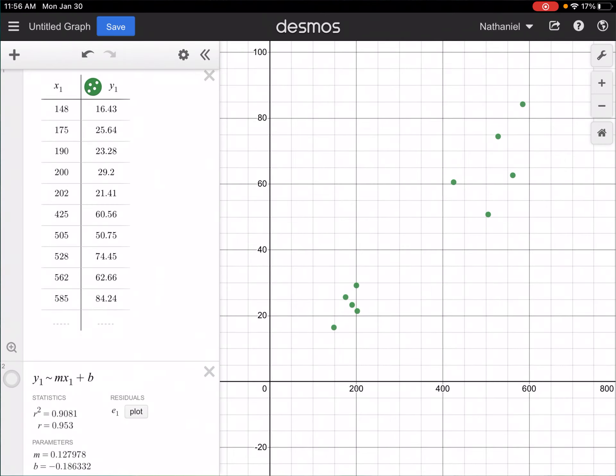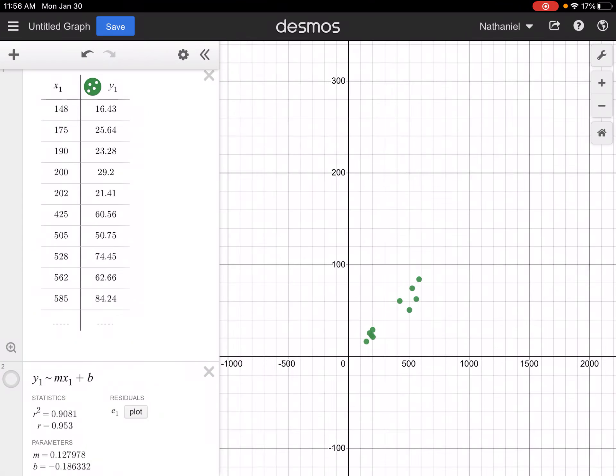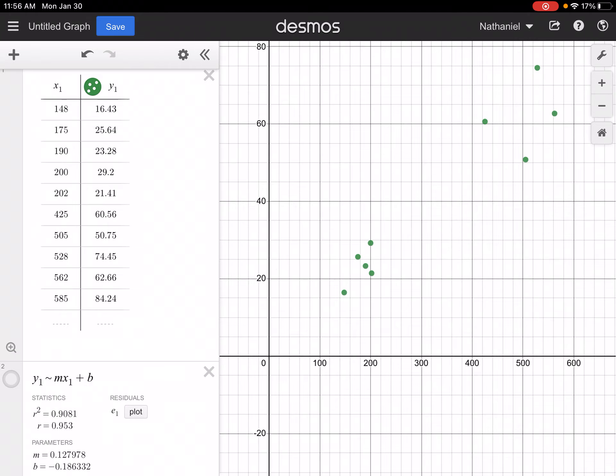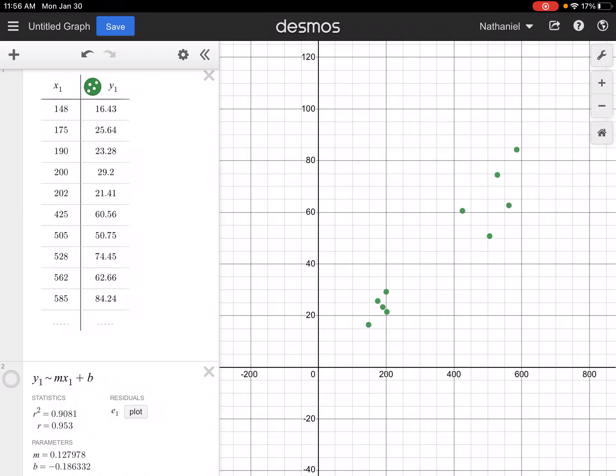So let's switch over to Desmos. So I've already typed in all of these data points, and we've got all of our dots on here. Once you get all of your dots in, the best thing to do is click on the little magnifying glass icon down next to your table with a plus sign, and that will automatically give you a good window for it.